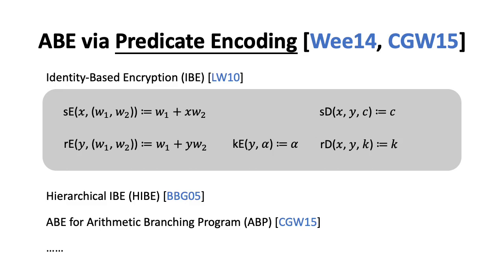Such predicate encodings are also known for several predicates, such as equality predicate in identity-based encryption like LW10, where you can obtain the message only if X equals Y, prefix equality predicate in hierarchical IBE like BBG05, and arithmetic branching program in ABE like CGW15, and so on. In this talk, we will employ the first simple predicate to illustrate our framework.